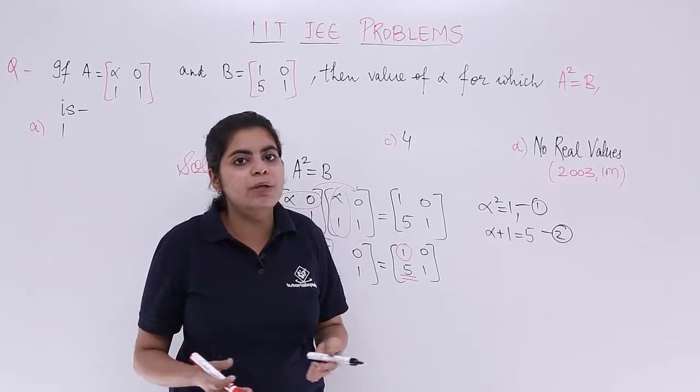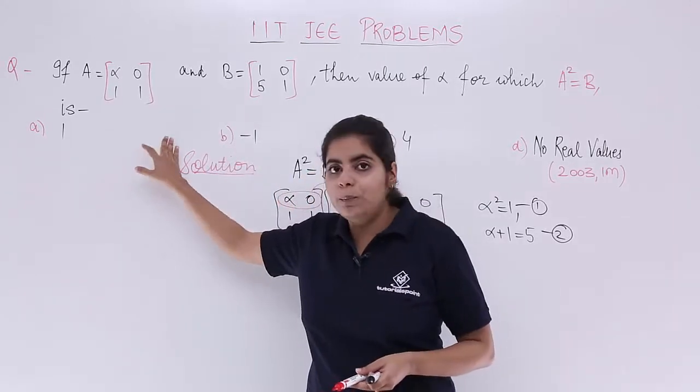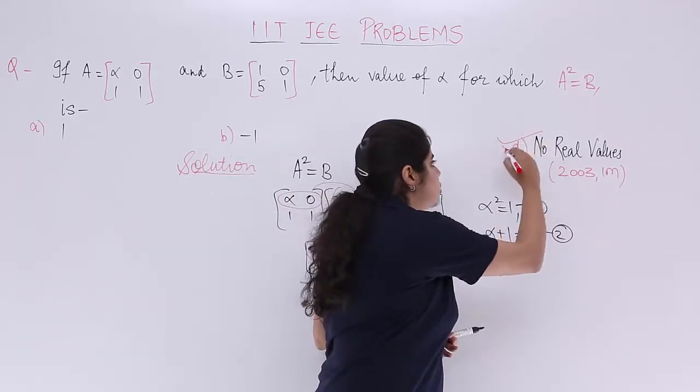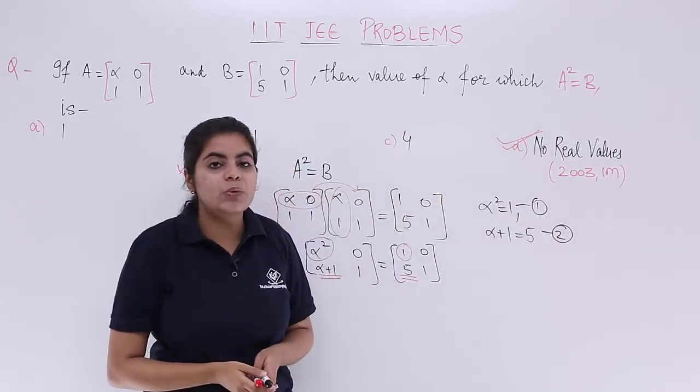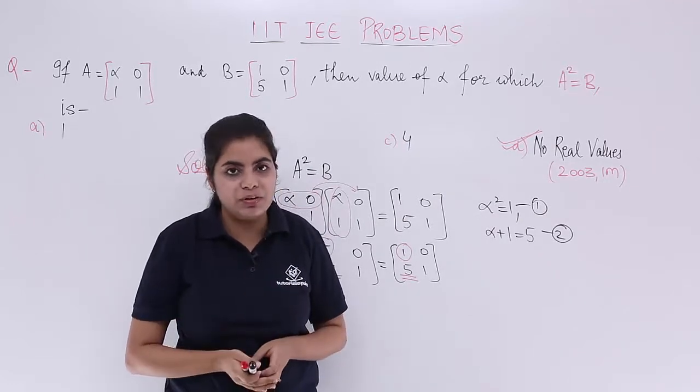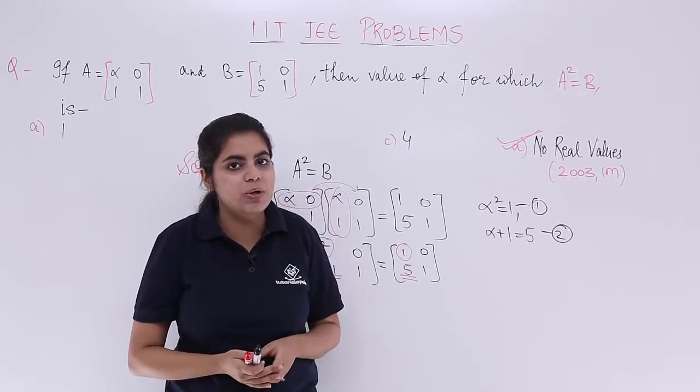So my answer cannot be option A or B or C because there is no fixed value. But the answer to this question is option D which is no real values, because there is not any single value of alpha which satisfies both the equations simultaneously.